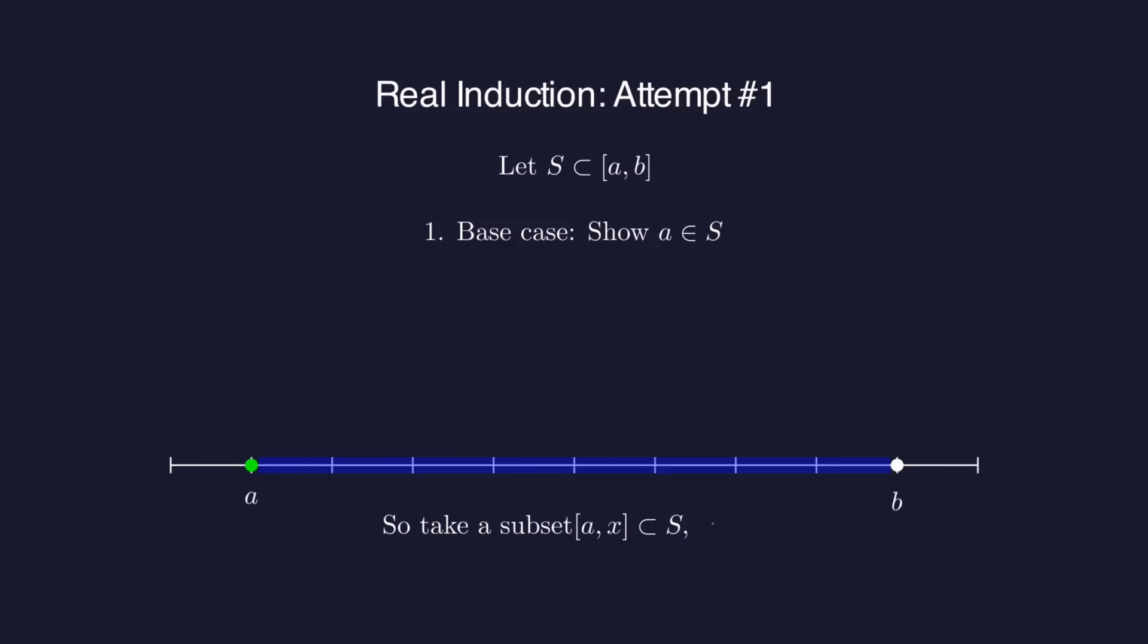There's no next real number after x but we could try this. Suppose we know that the interval from a to x is a subset of s. Then we will assume that this always implies that there is some positive delta such that the interval from x to x plus delta is also a subset of s.